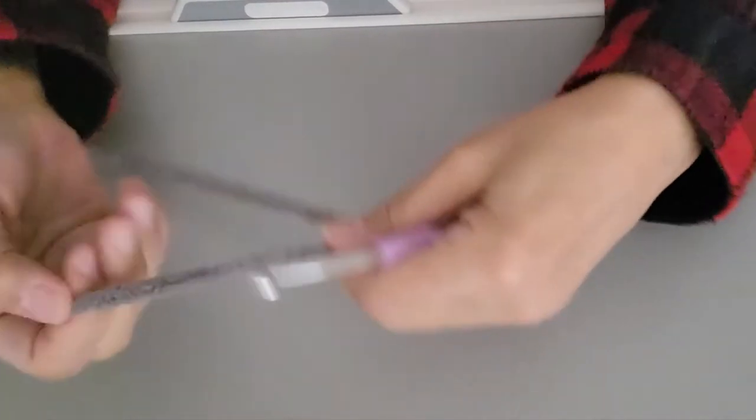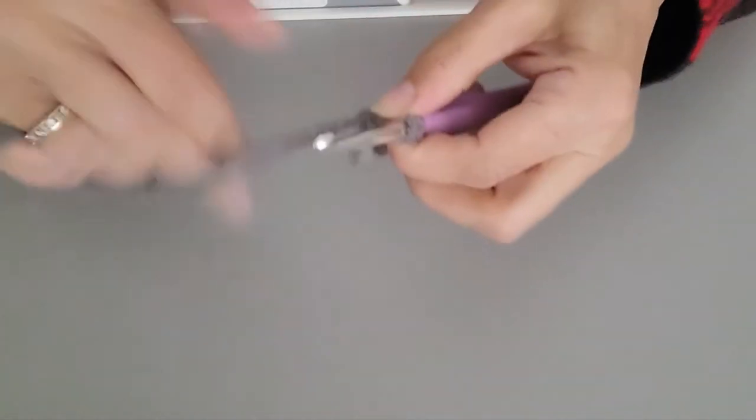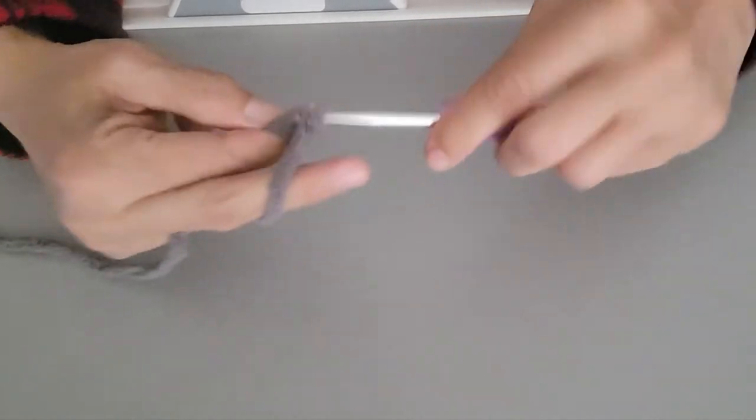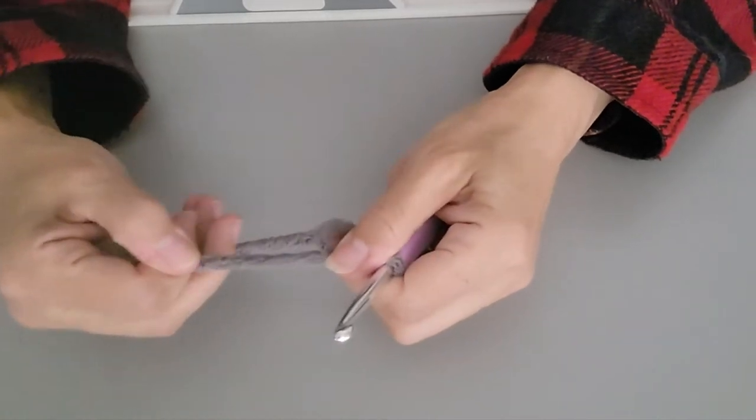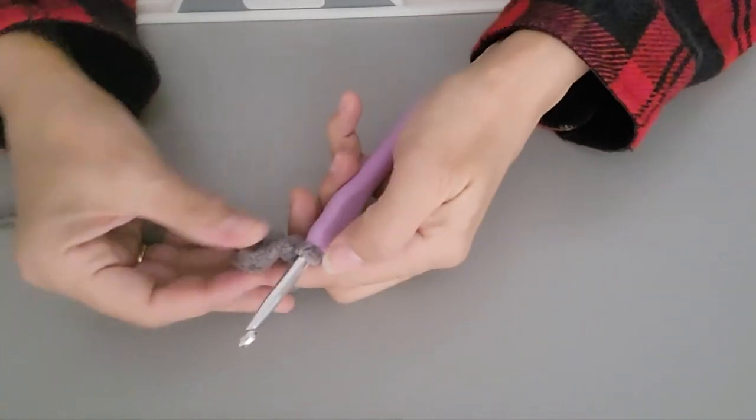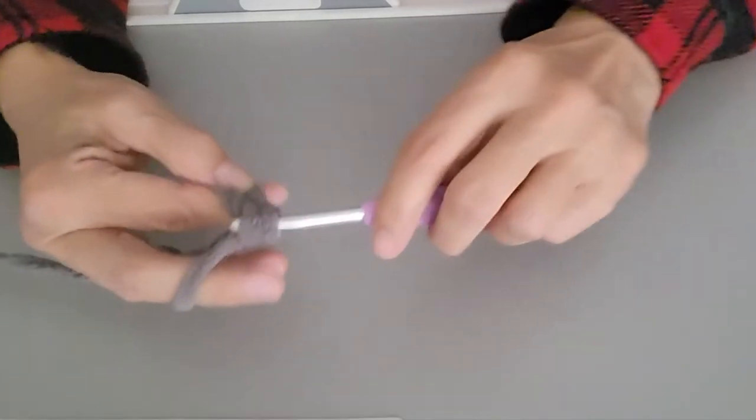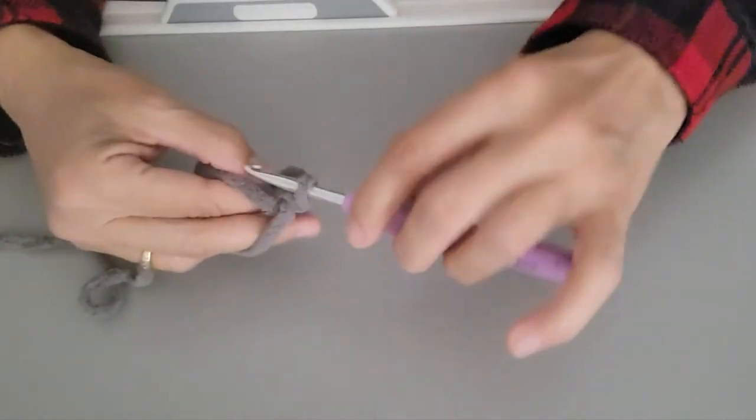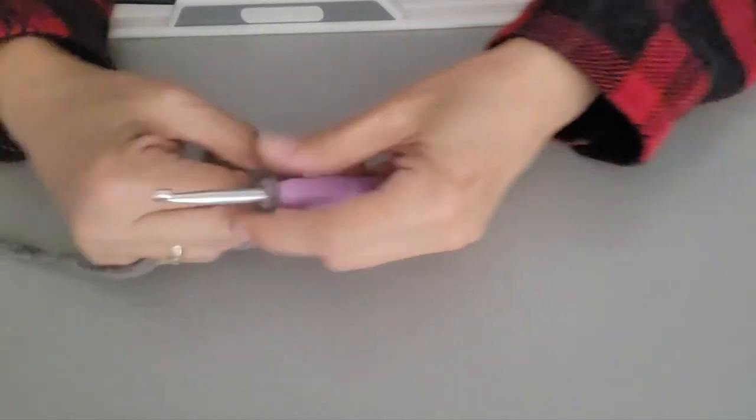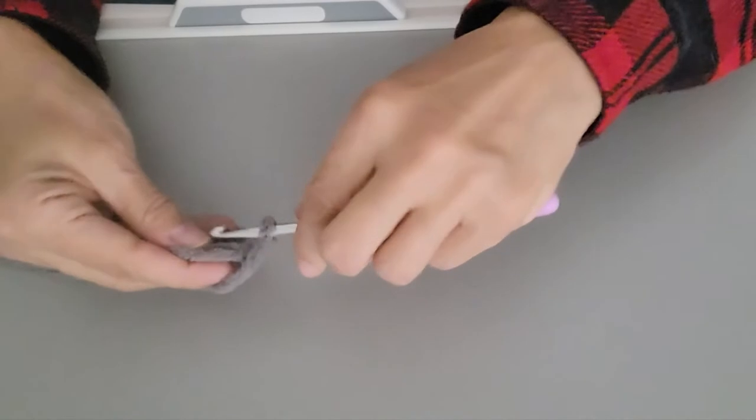So I'm going to set that aside, and I'm going to do the exact same thing. So here's my magic circle again, going between my fingers, bringing up a loop, and then bringing a loop through there, making the magic circle smaller for more control. And then I'm going to do five single crochets inside of that magic loop. One, two, three, four, five.